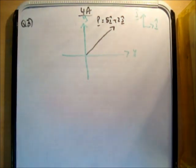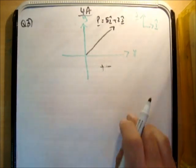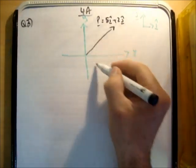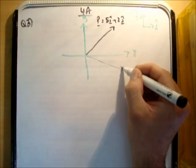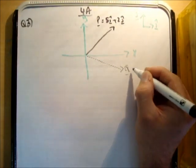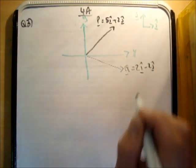Then we need to draw the vector Q. The vector Q is plus in the x and negative in the y, so it's in this quadrant here. So Q is equal to 2i minus 2j.